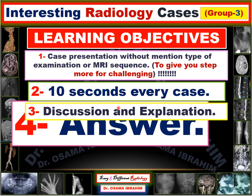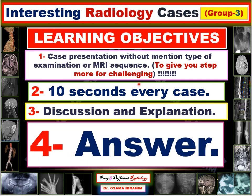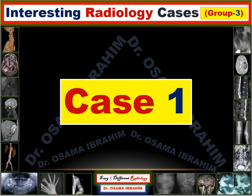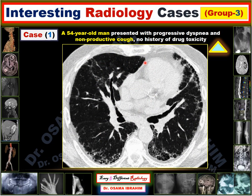Let's start with the first case. This patient is a 54-year-old man presented with progressive dyspnea and non-productive cough. There is no history of drug toxicity. This is the examination — I will give you 10 seconds and then continue with discussion and explanation.